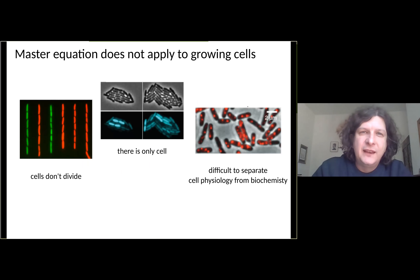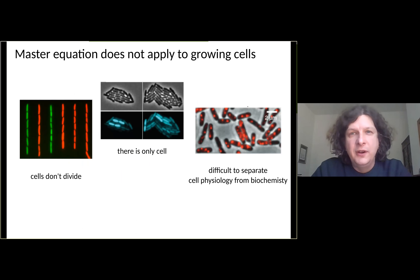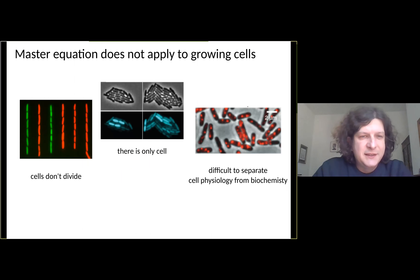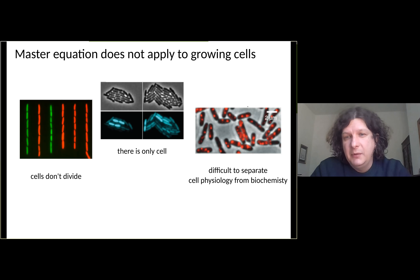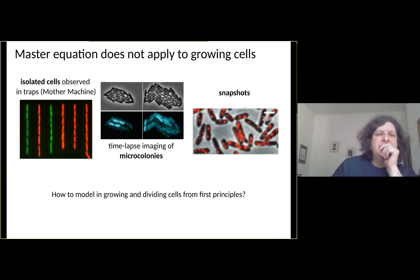The main argument I want to propose is that the chemical master equation does not apply to growing and dividing cells. The reason is that cells do not divide in the master equation, and it only describes one realization - one cell. It's therefore difficult to separate different sources of variability, namely those from cell physiology - age and size - from those that come from gene expression itself. The first question I want to address is how to model gene expression in growing and dividing cells from first principles.